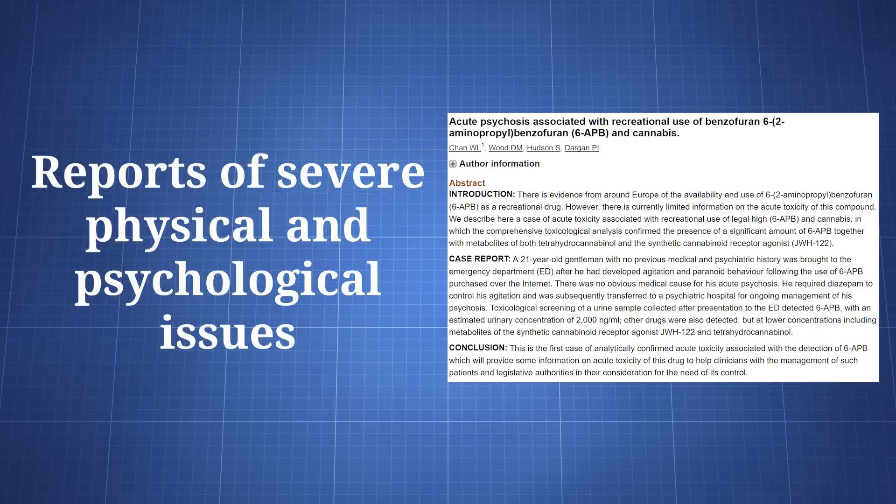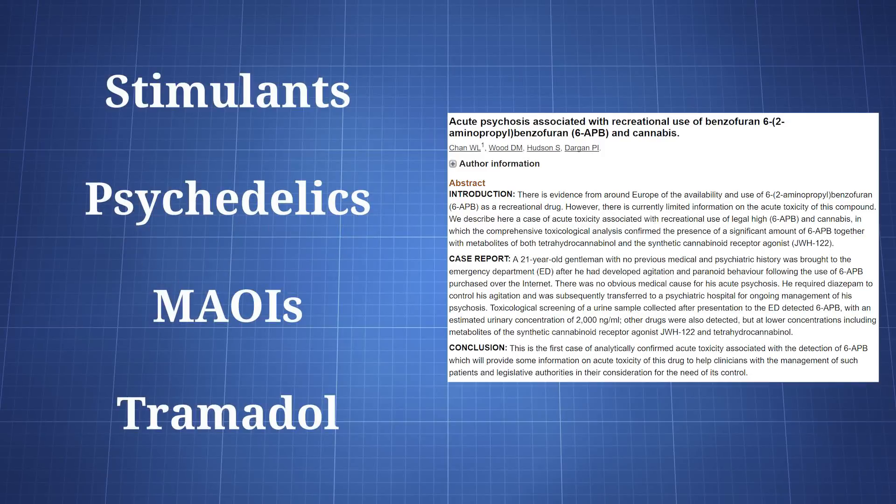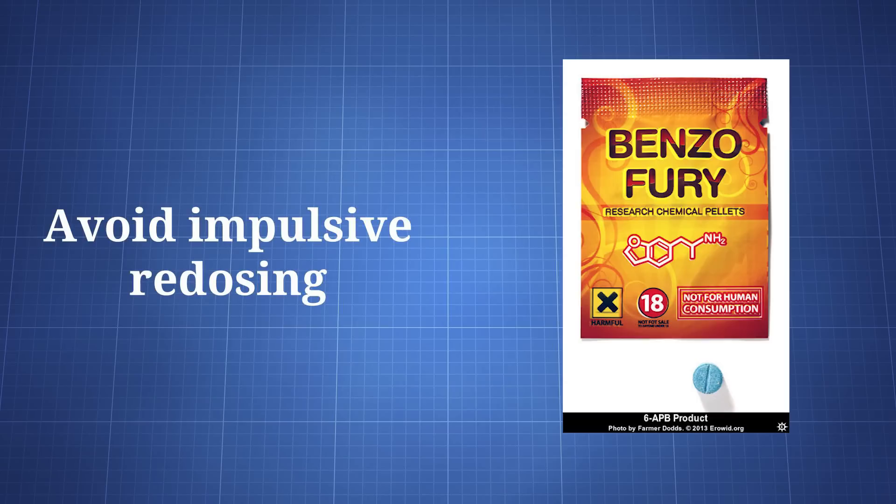There are a few cases of severe acute physical and psychological health issues associated with the use of 6-APB combined with other drugs, suggesting 6-APB could be acutely dangerous, but is significantly more likely to be so when combined with other drugs. Drugs in the stimulant and psychedelic categories may be particularly troublesome, as could MAOIs and Tramadol. You should avoid impulsive redosing due to safety issues and the extended sleep deprivation that is likely to appear.